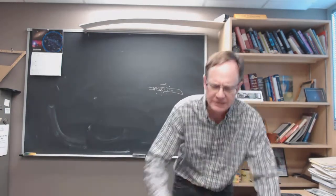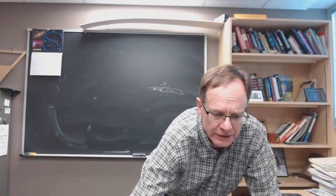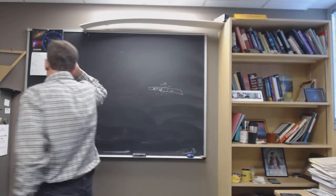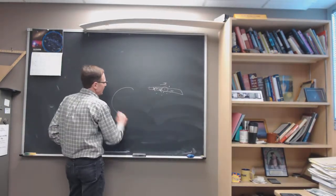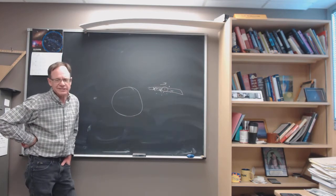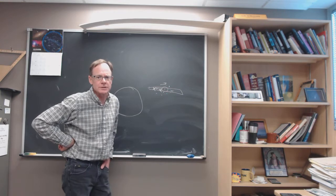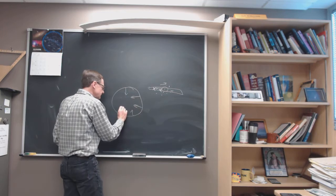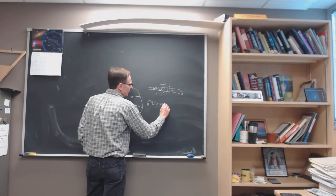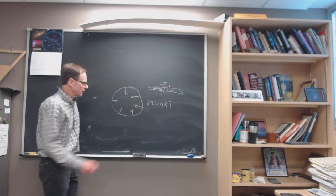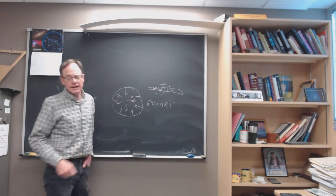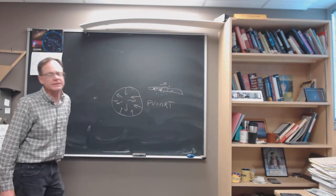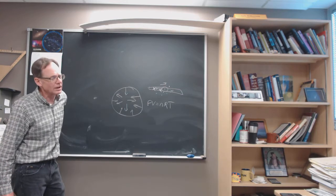We're going to start by talking about star formation. The next few slides are beautiful photographs of star formation regions. In a star formation region, you've got a cloud of gas and dust sitting in hydrostatic equilibrium, where gravitational pressure wants to pull it inward and gas pressure — PV = nRT — wants to push it outward. Those two things are balanced and the cloud just sits there.